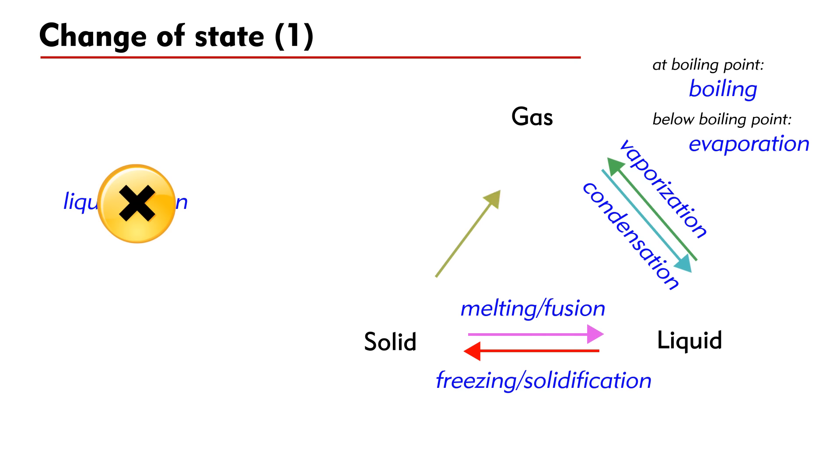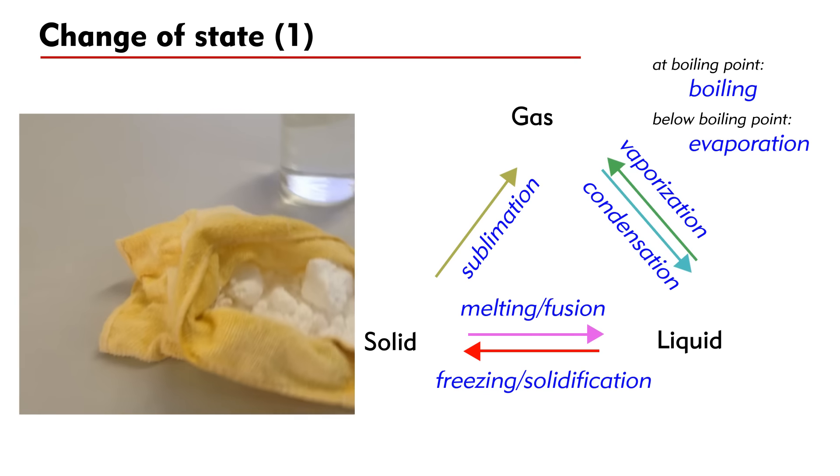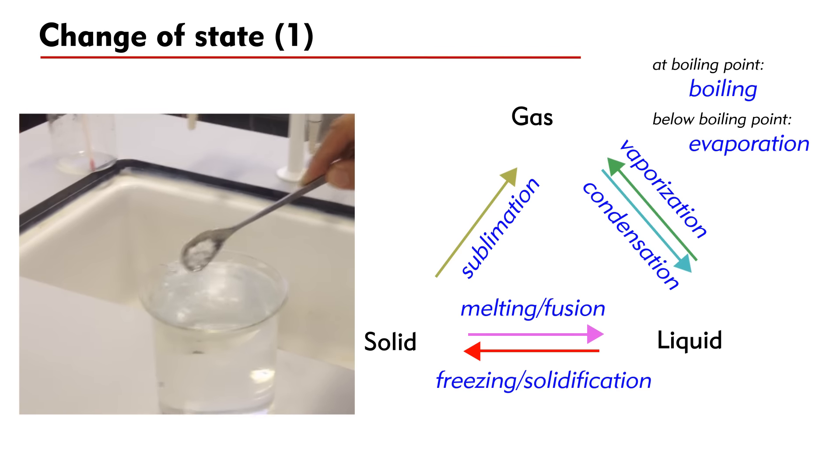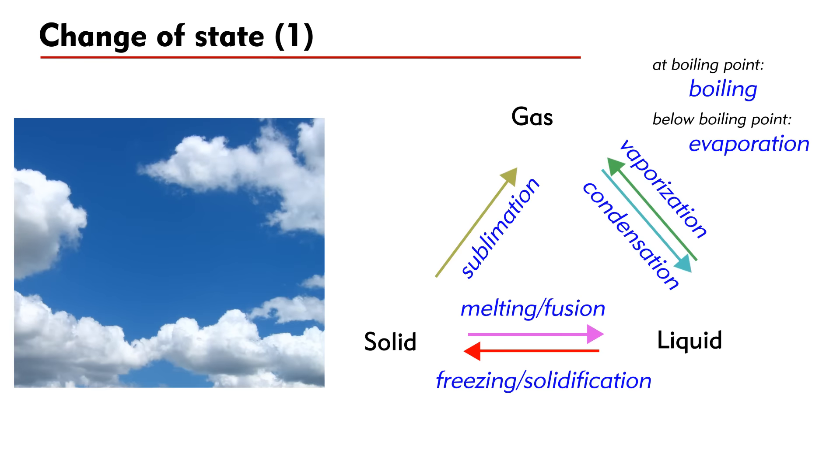A change from solid to gas directly is called sublimation. A piece of dry ice placed in air will disappear after a while. The solid carbon dioxide changes into carbon dioxide gas directly without the need to go through the liquid state.